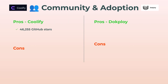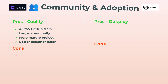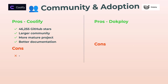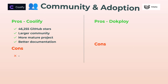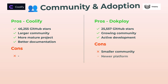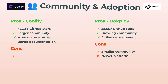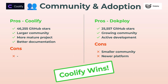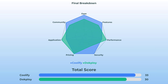Finally, let's chat about community and adoption. Coolify has over 46,000 GitHub stars — the community is bigger, more mature, and their documentation actually answers your questions. DocPloy is growing with 25,000 stars, not too shabby. The platform's newer but catching up. But if you want support right now and less guesswork, Coolify definitely has the upper hand.